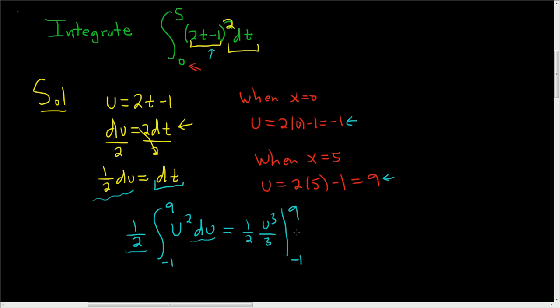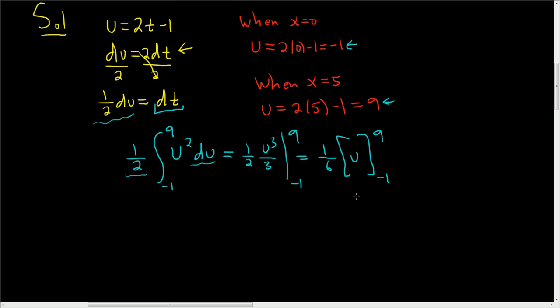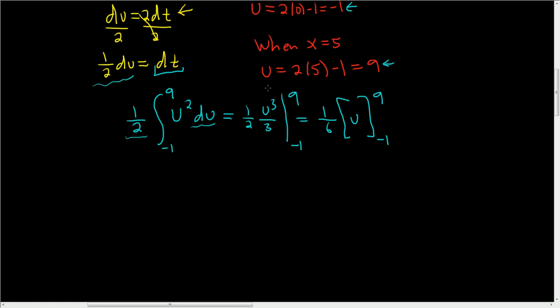And 2 times 3 is 6, so this is 1 sixth. And then here we have u cubed from negative 1 to 9. All right. The key is you always plug in the upper limit of integration first. So we want to plug in the 9 first. So this is 1 sixth, 9 cubed.